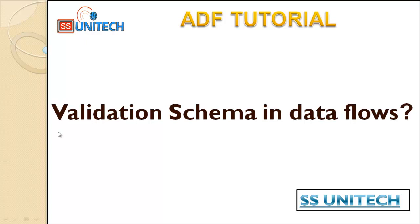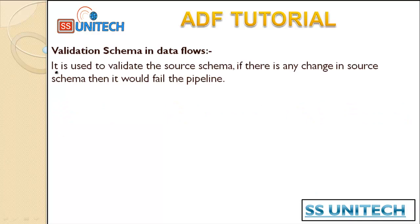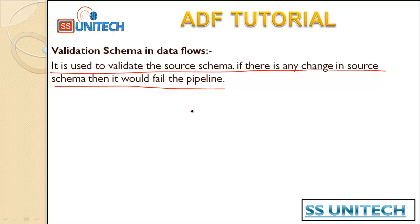Hey guys, welcome to SS Unitex. Today we are going to see about the validation schema in the data flow. Validation schema is basically used when your source and your sink are not the same and you don't want to execute your pipeline. According to Microsoft, it is used to validate the source schema — if there is any change in the source schema, it would fail the pipeline.